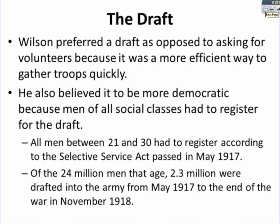Issues back at home: one is the draft. Wilson preferred a draft as opposed to asking for volunteers because he thought it was a more efficient way to gather troops quickly. He also believed it to be more democratic because men of all social classes had to register. All men between 21 and 30 had to register according to the Selective Service Act, passed in May of 1917. Of the 24 million men that age, 2.3 million were drafted into the army from May 1917 to the end of the war in November 1918.